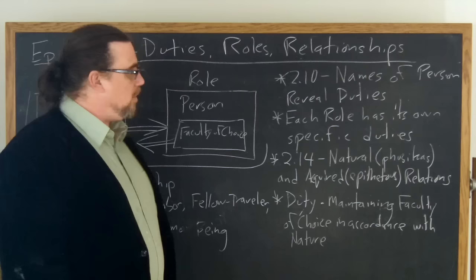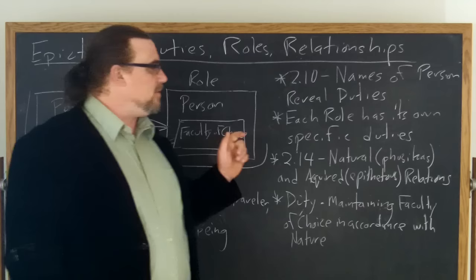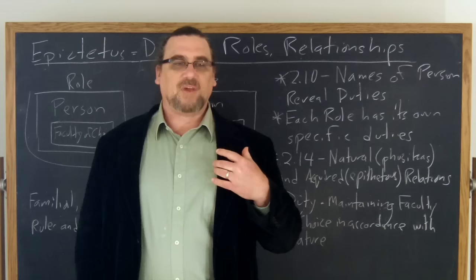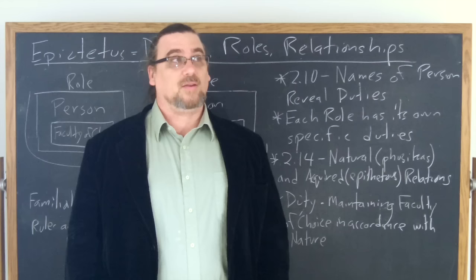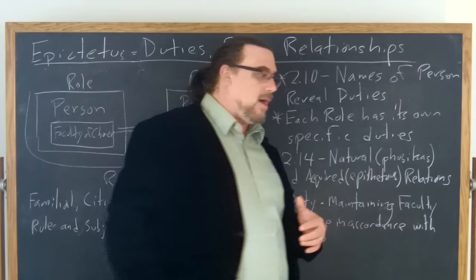In chapter 14, he uses two terms that are kind of important to think of. He talks about relations, and he mentions that some of them are natural, physikos, and some of them are acquired, epithetus. And so this makes sense for us as well. When I decided that I was going to become a professor, which happened quite a long time ago, so long that it almost feels natural, that was actually a chosen thing. When I got married, that was a choice. I suppose you could say to a certain extent to have children is also a choice as well. It's one that creeps up on many people and surprises them.